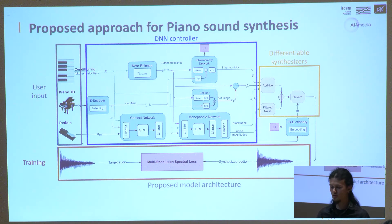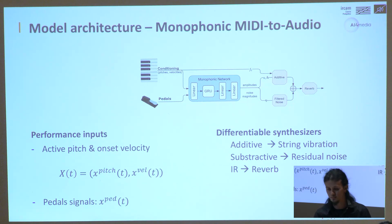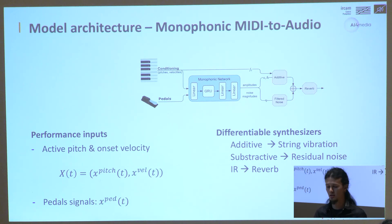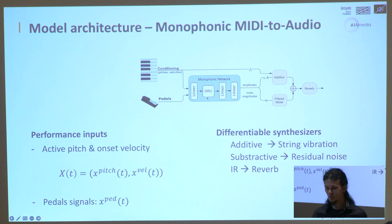The model is trained in an end-to-end supervised fashion by trying to reproduce a target sound. For the simpler monophonic MIDI-to-audio case, we have a small model that takes as input the active pitch and onset velocity — a conditioning vector composed of pitch components indicating which note to play at which time step, and velocity components handling the force of the key press at onset time, plus the pedal signals. A recurrent neural network predicts controls for the differentiable synthesizers, which are responsible for different parts of the piano sound.